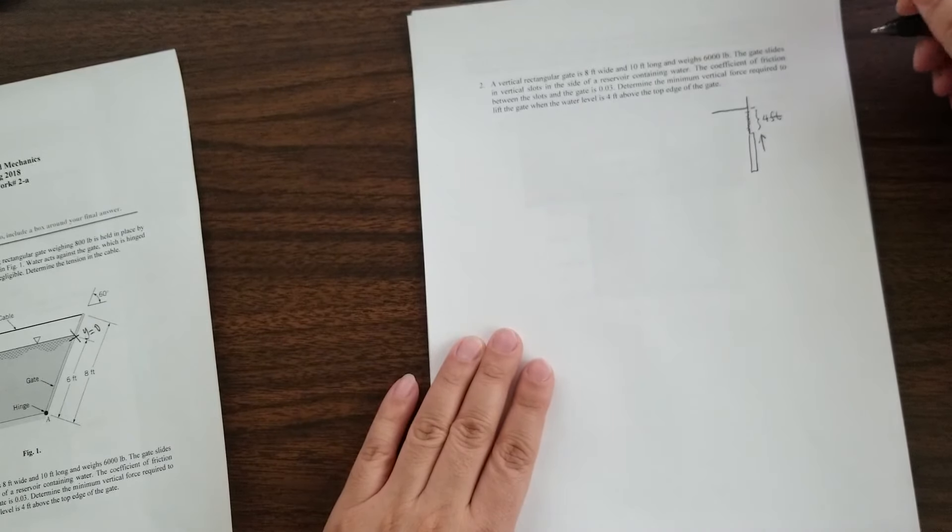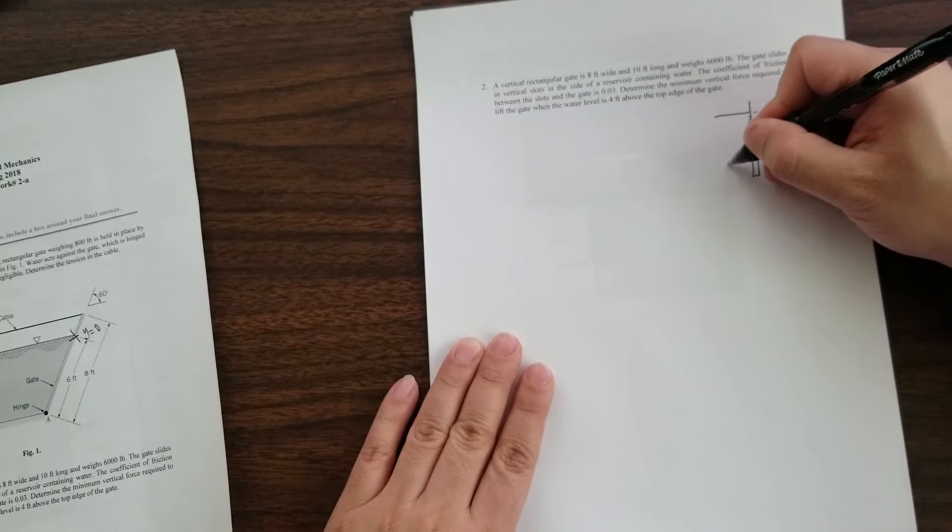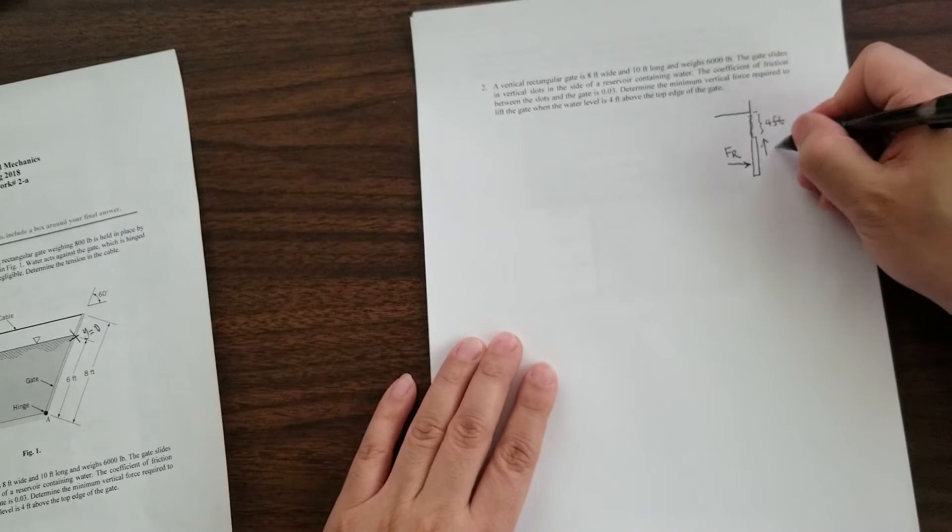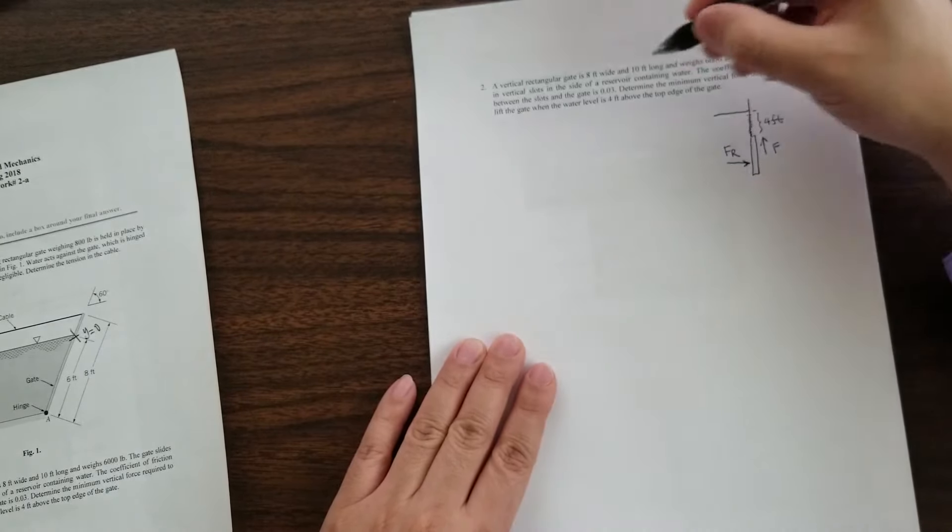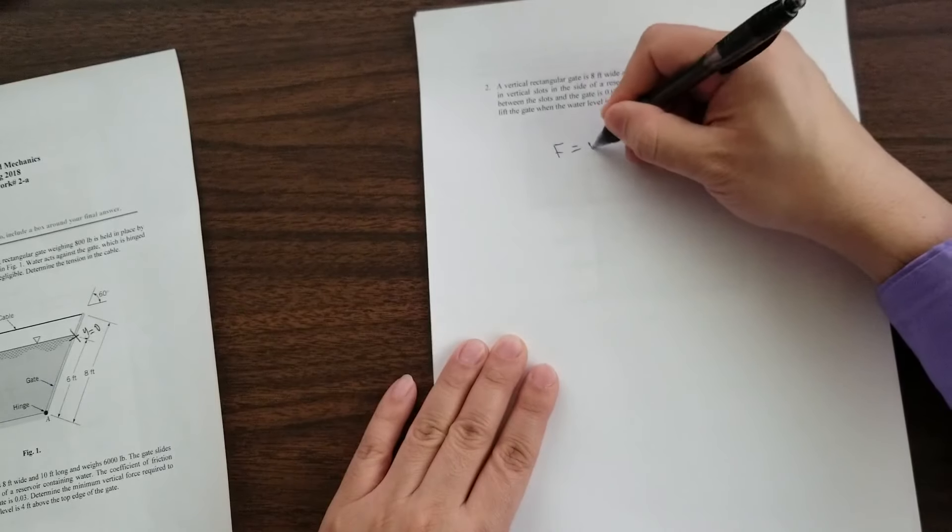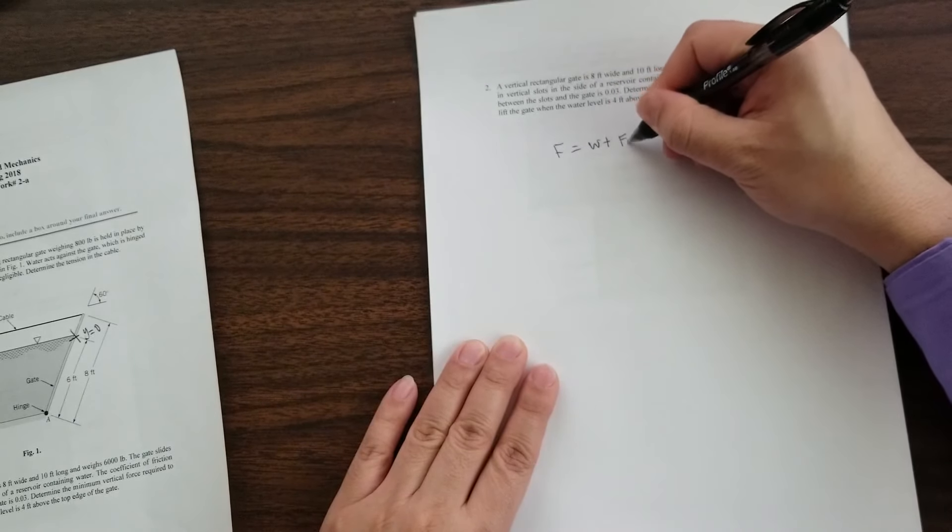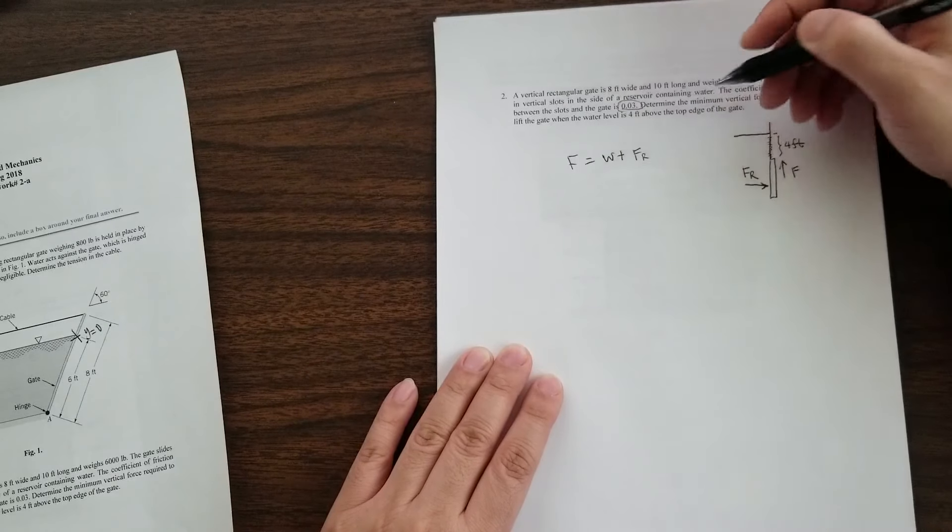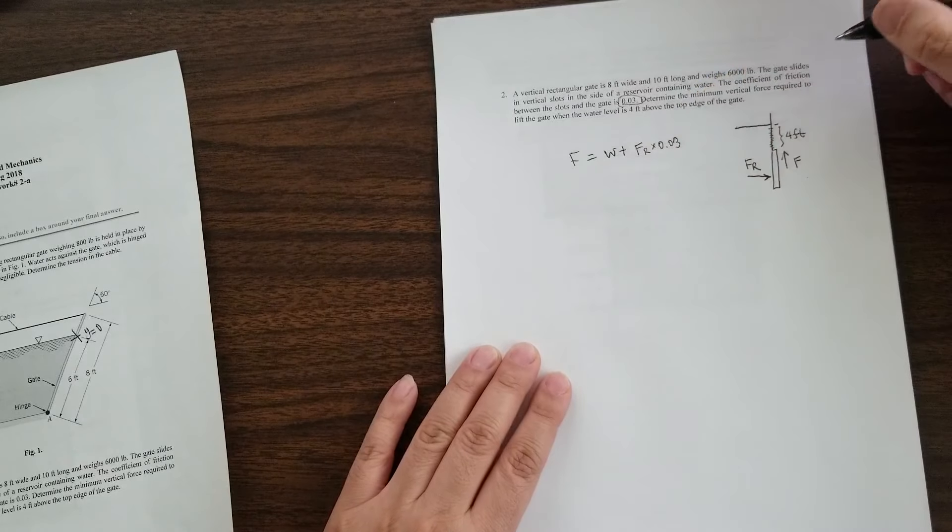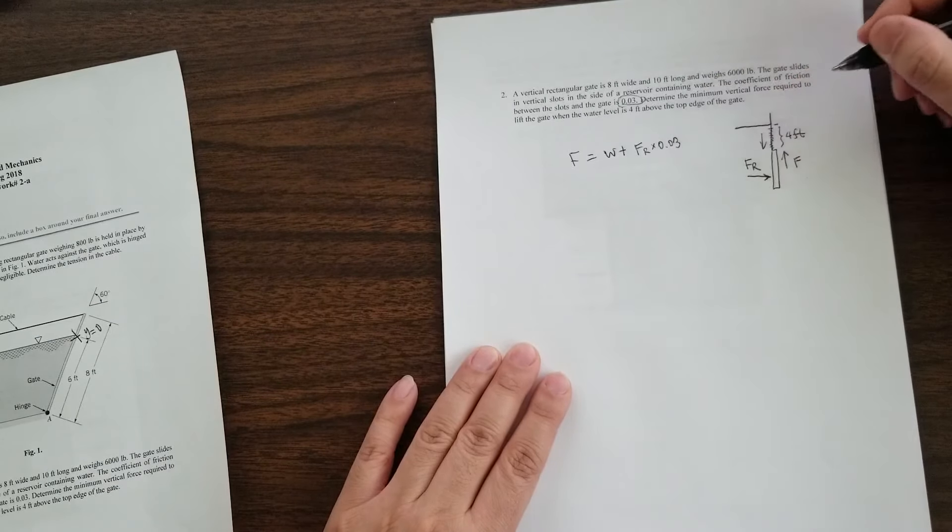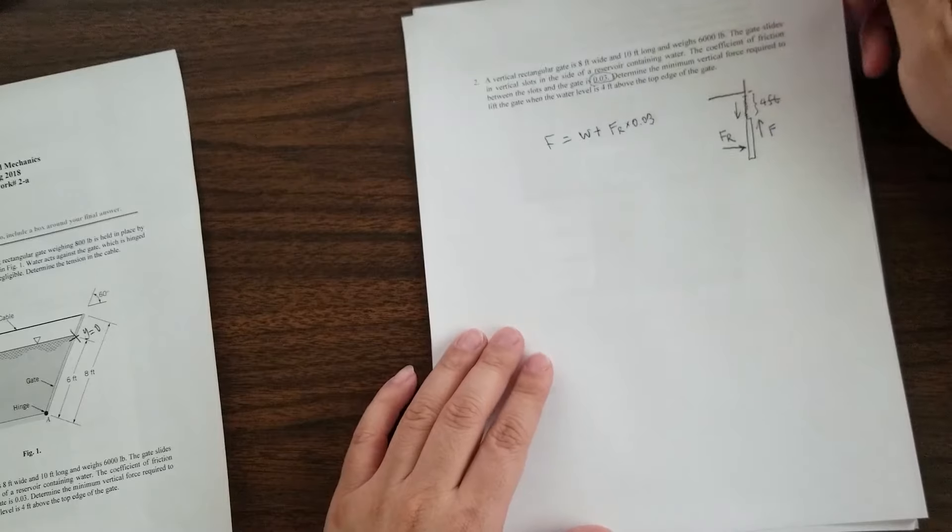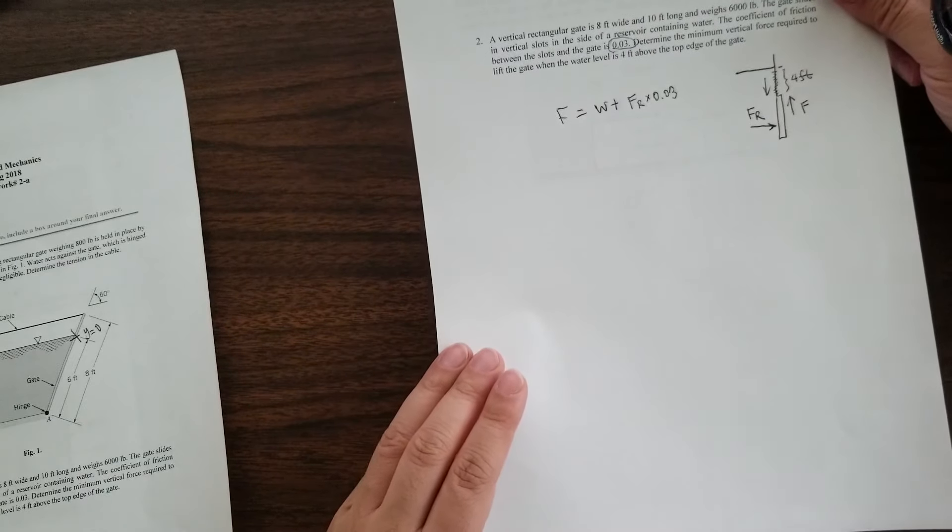And the way you want to solve this problem is you want to figure out the magnitude of FR. The force that is supposed to pull this gate up need to overcome two things. The force need to overcome the weight plus the FR times this friction factor. Maybe we didn't talk about this in class. So I am adding this here. So this friction factor times 0.03 is the friction forces exerted by the racks as you try to pull the gate up. So that's the hint for this problem.